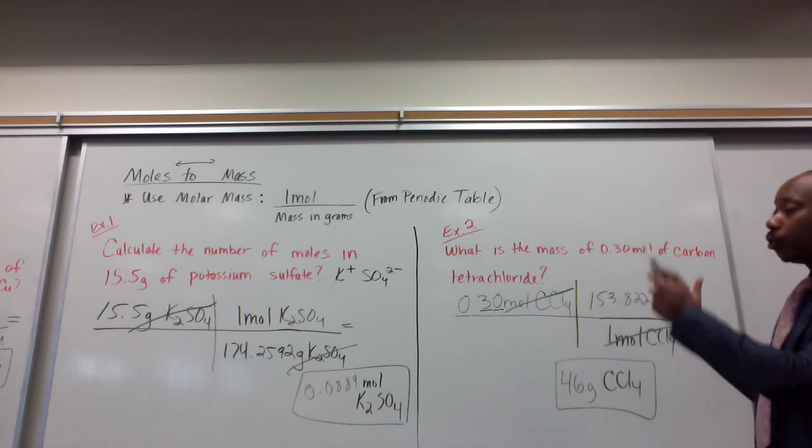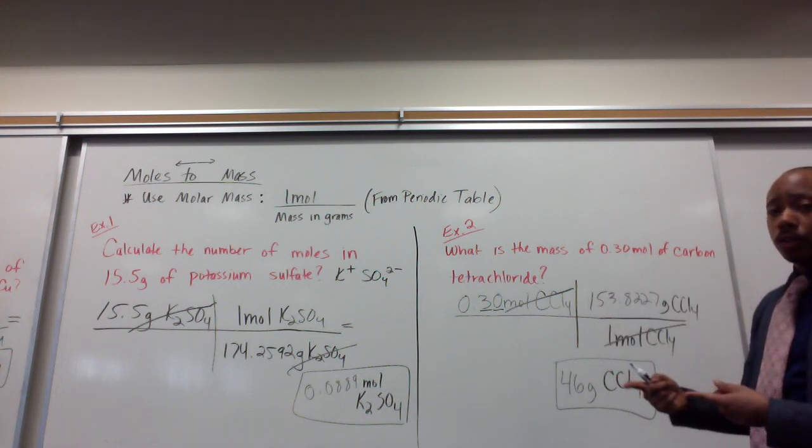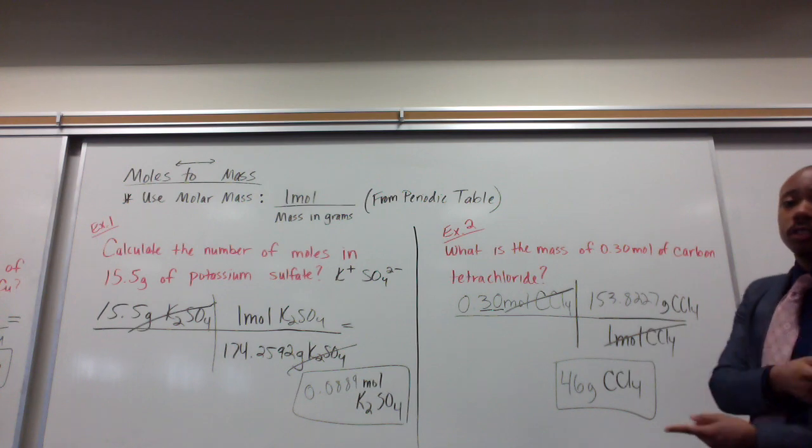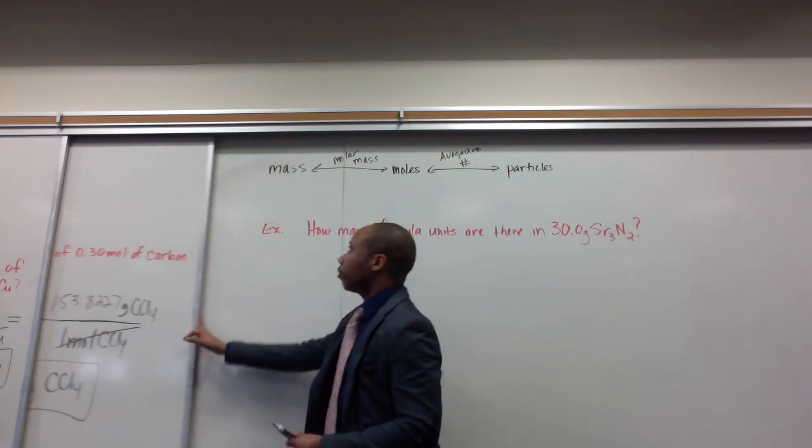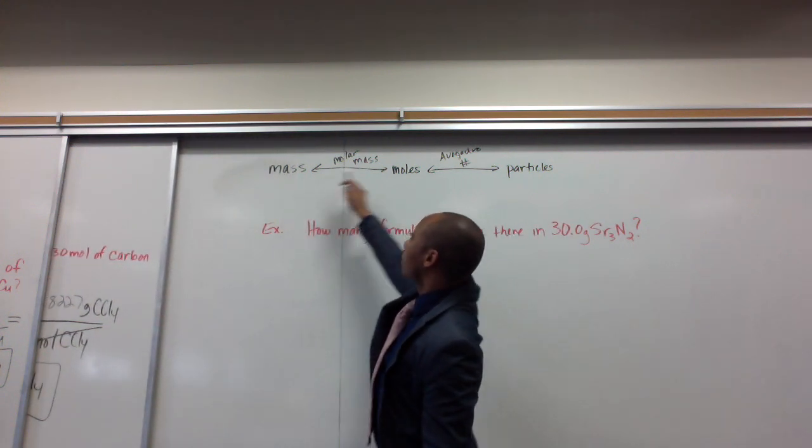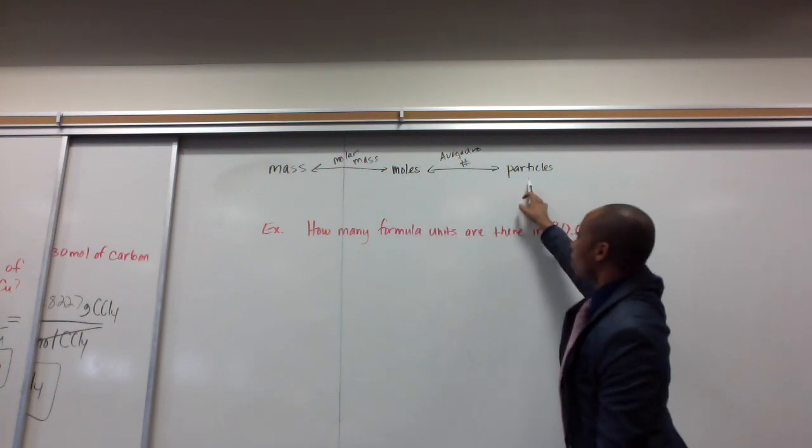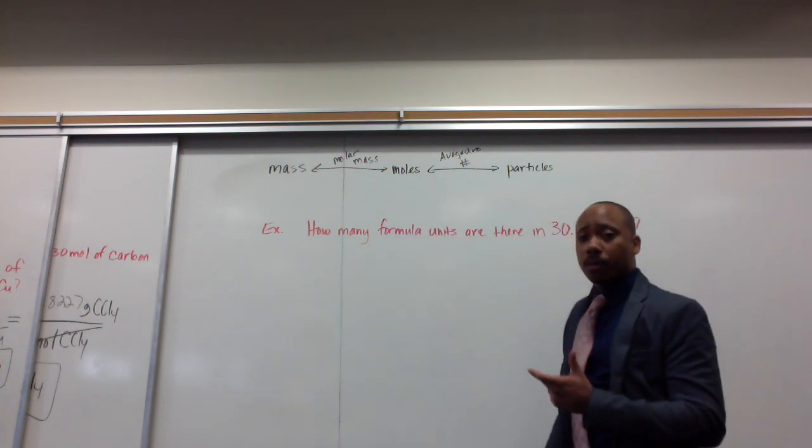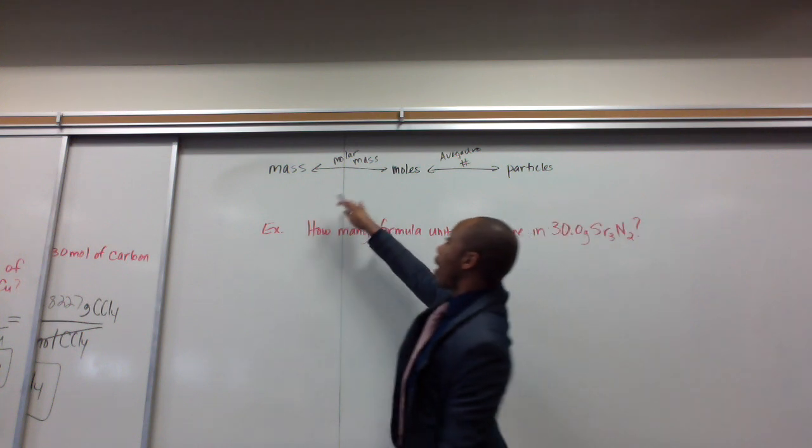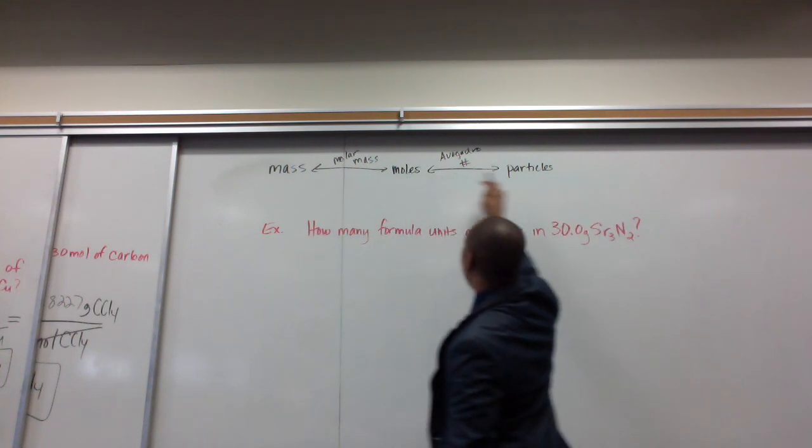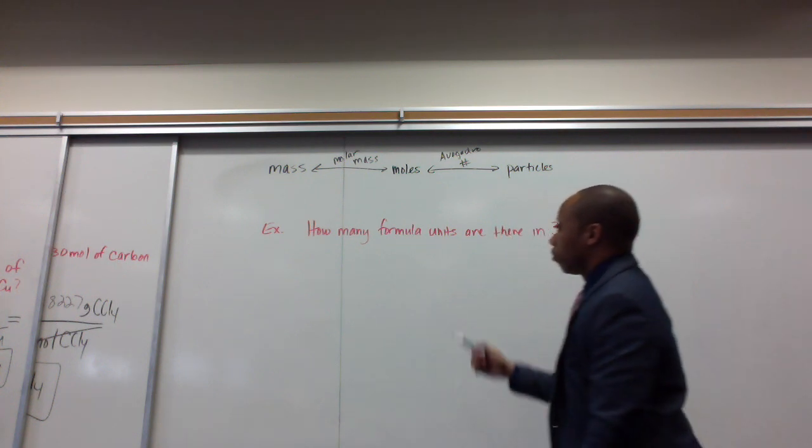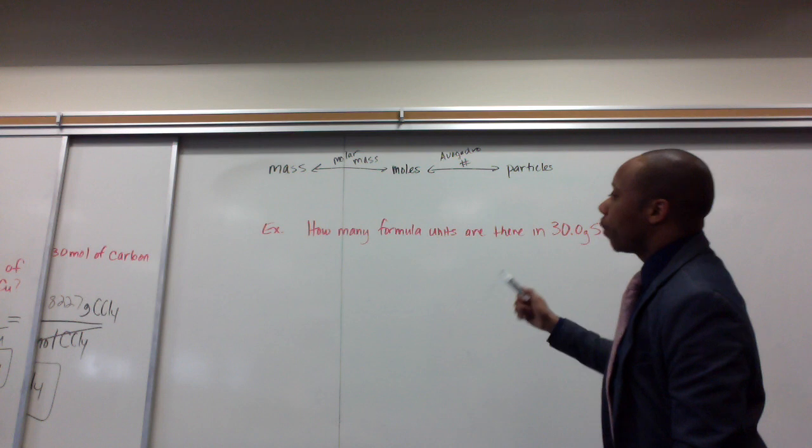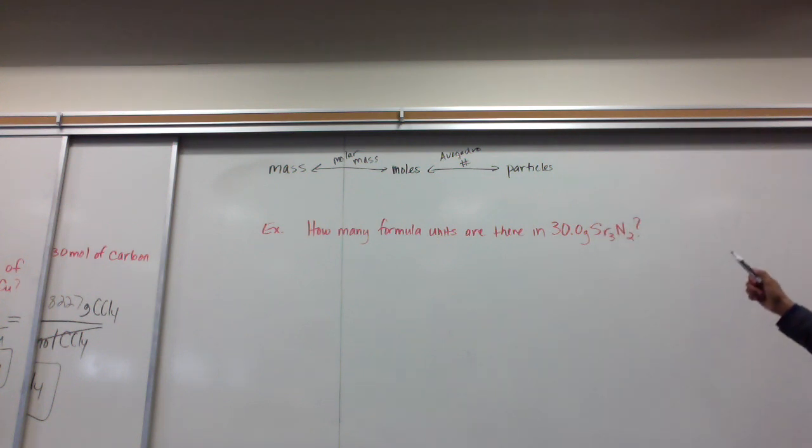Now, we can put these two concepts together, going from moles to particles and then moles to mass. We do that together and it looks like this. I can go from mass to moles and moles to particles. It's a two-step process, but I'm using both the tools that I just learned. I go from mass to moles using the molar mass. I go from moles to particles using Avogadro's number. Now, this question reads this. How many formula units are there in 30 grams of strontium nitride?